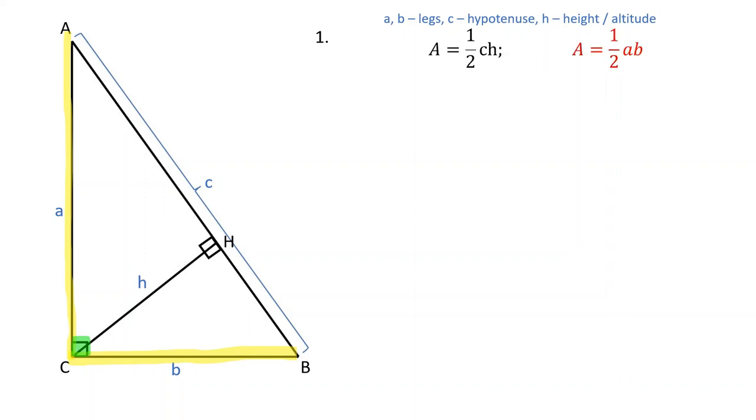Therefore, the area of a right triangle can also be calculated as half the product of its legs.